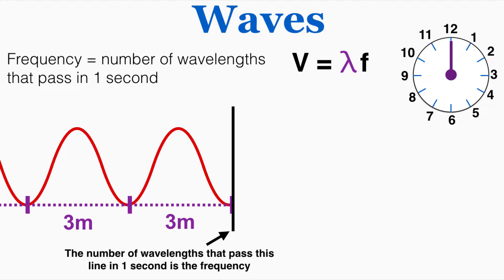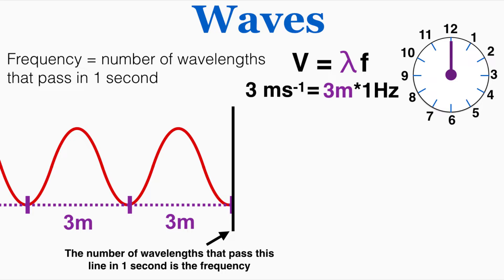I'm going to give you some more visual intuition about how this equation works. The velocity is the specific amount that this wave will move in one second, the wavelength is the length of one complete pattern of a wave, and the frequency is the number of wavelengths that will pass in one second. To visualize this, I have a wavelength of three meters. Imagining a frequency of one Hertz — one event per second — this equation tells me the velocity will be three meters per second.